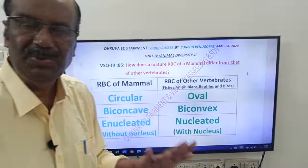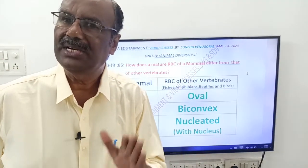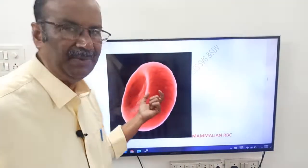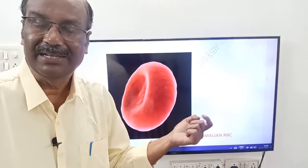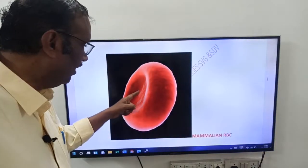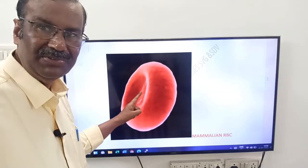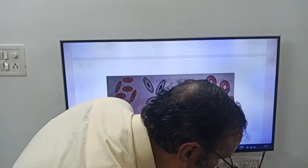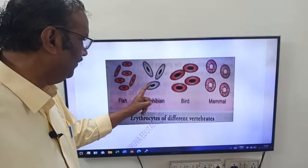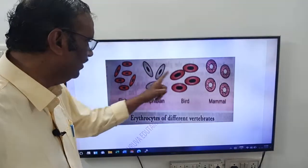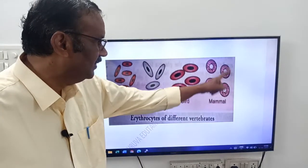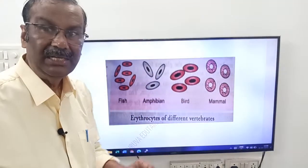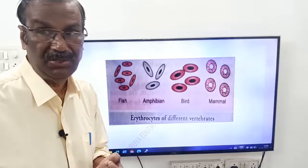This is about the difference between RBC of mammals and other vertebrates. Here you can see the image. This is the mammalian RBC — it is circular, not oval, and it is biconcave, not convex. Now see the RBC of other vertebrates — fishes, amphibians, reptiles, and birds — they have a nucleus. The mammalian RBC is circular; the others are oval. RBC is also called erythrocytes.